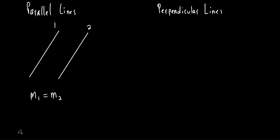So what if the slope of this line is five-thirds? What's the slope of this other line if they're parallel to each other? It's also five-thirds. If two lines are parallel, they have the same slope. That's the easiest one — definitely the easiest concept here.